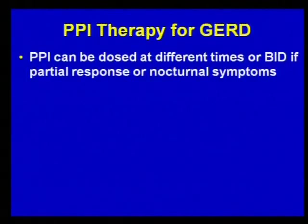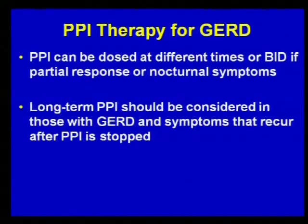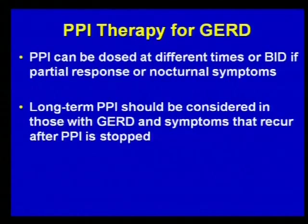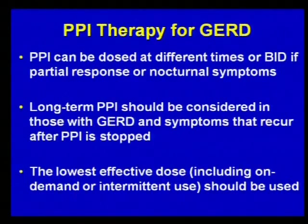You don't need to start with twice-daily PPI therapy. You can go to that dose if someone has a partial response to once-daily therapy or has breakthrough symptoms at night. We know that if you stop PPI therapy in people with ongoing reflux disease, they'll have recurrent symptoms. There's really probably little harm in putting someone on a long-term PPI if they have recurrence upon stopping. Always put someone on the lowest effective dose — for some people it may be just on-demand rather than once every single day.